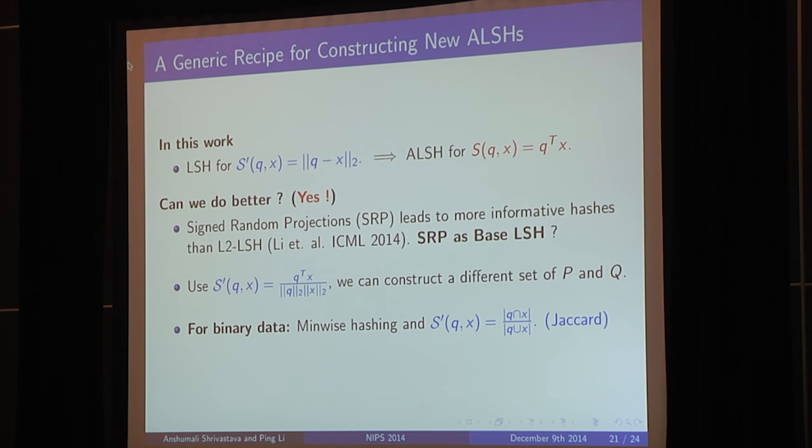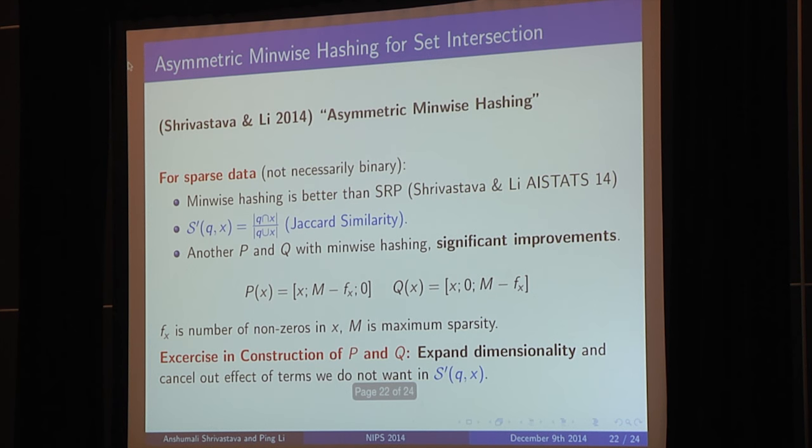All right, so what have I done? Let's look back. And we started with, we took the L2 LSH and used asymmetric transformation to convert it into a hashing scheme for inner products. Well, what is special about L2 LSH? Nothing. In fact, if you are working with hash functions for a long time, you know that there are two other hash functions out there, which is signed random projection and minwise hashing, and they have much better properties. This is what we showed in this year's ICML. And so, it's a good curiosity to start with cosine similarity and convert it into a hash function for inner products. We can do that. And more interesting one is the minwise hashing. So if your data is very sparse, then you can actually use the Jaccard similarity and come up with different asymmetric transformation, which are again not very difficult, and you get a much better improvement in retrieving inner products. And again, the whole exercise is you play around with the dimension, add terms, and cancel out the effect of the terms that you don't want.